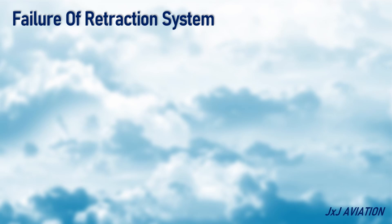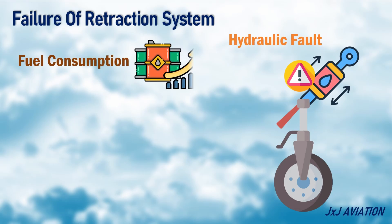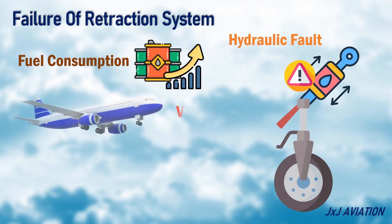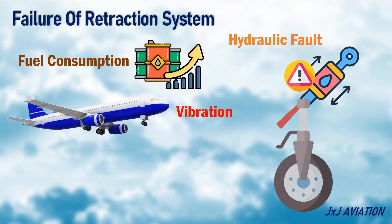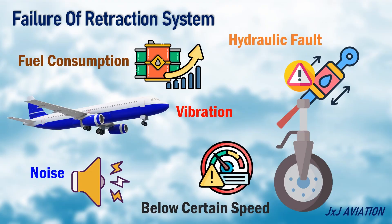Failure of the Retraction System. One of the reasons for the landing gear retraction system to become inoperative is a hydraulic fault. Because of the failure of the retraction system, there is a drastic increase in fuel consumption. The aircraft would also experience more vibrations and constant noise in the cabin. With this failure, the aircraft has to be flown below a certain speed for the entire flight.